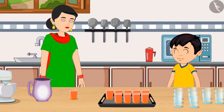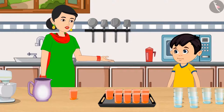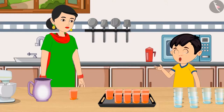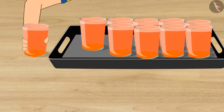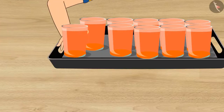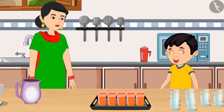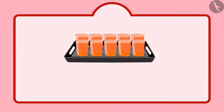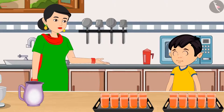So, this means, Chotu, that right now we have 9 units. Yes, Mummy, I remember. Now, if we put one more glass in this plate, it will be a group of 10 glasses. And we call it as one 10. You are absolutely right, Chotu. Here you go, Chotu. Your sherbet is ready.